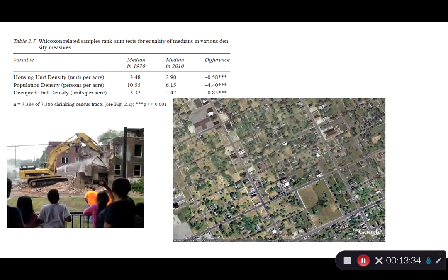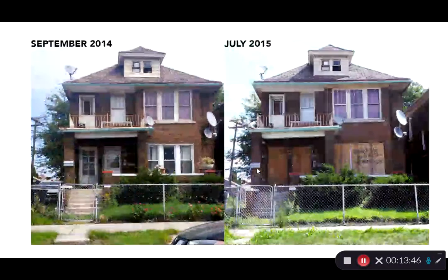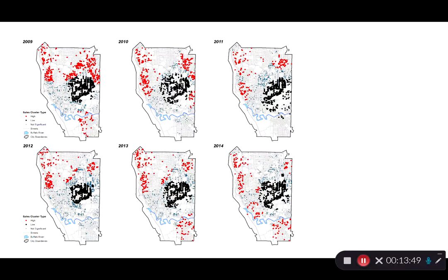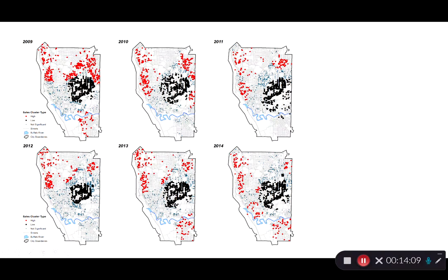We also see actually declining density as homes and properties are abandoned, and cities are starting to deal with having to remove abandoned and blighted homes. Housing also differs by neighborhood — this map of Buffalo shows red dots for high-sale areas and black dots for low-sale areas. If you own a home in certain areas it's very hard to sell, while other parts have a more active market, showing that even within cities we see differences in the housing market.